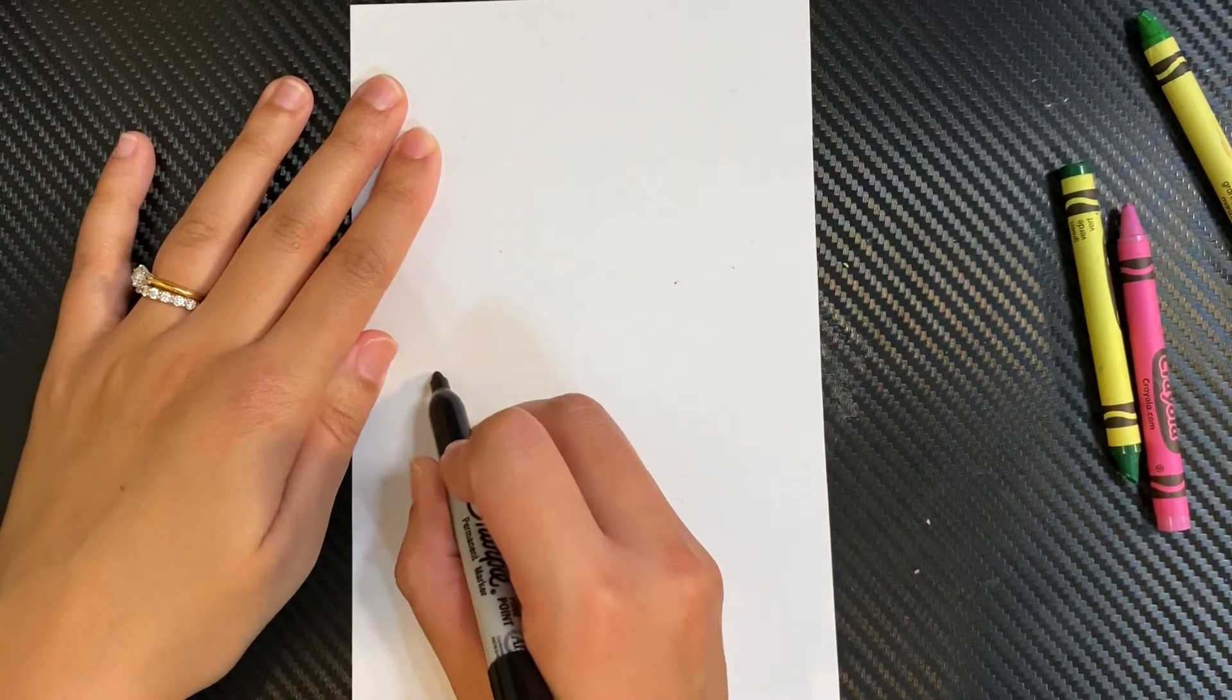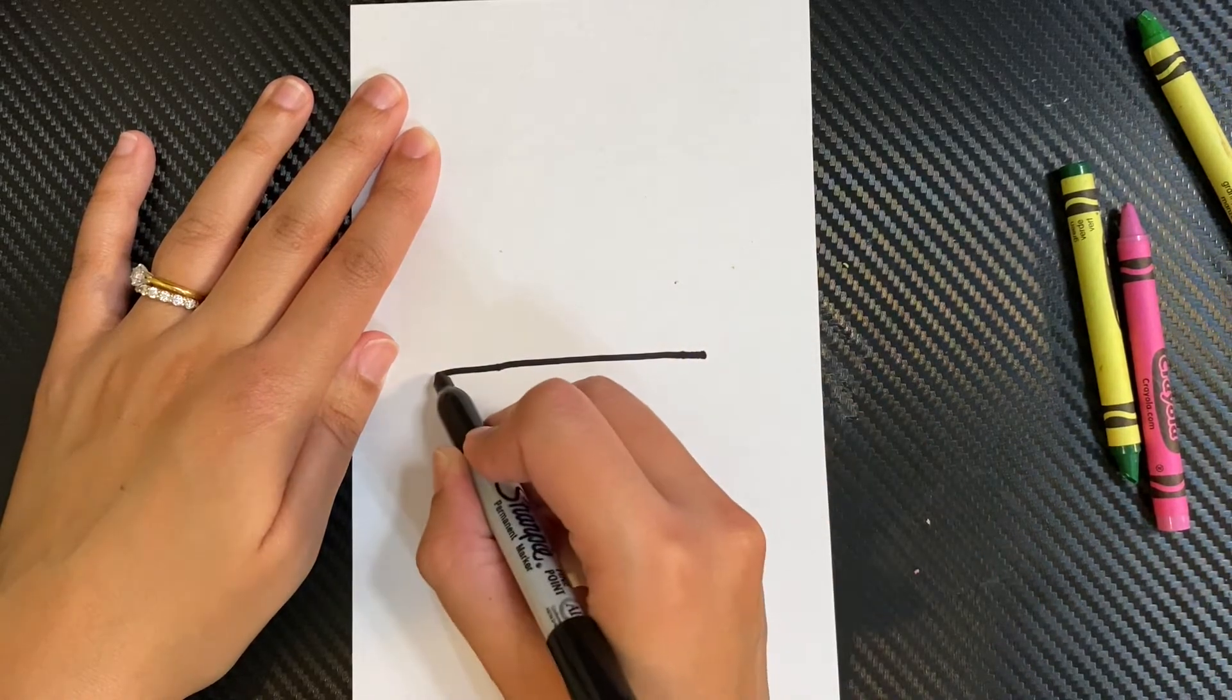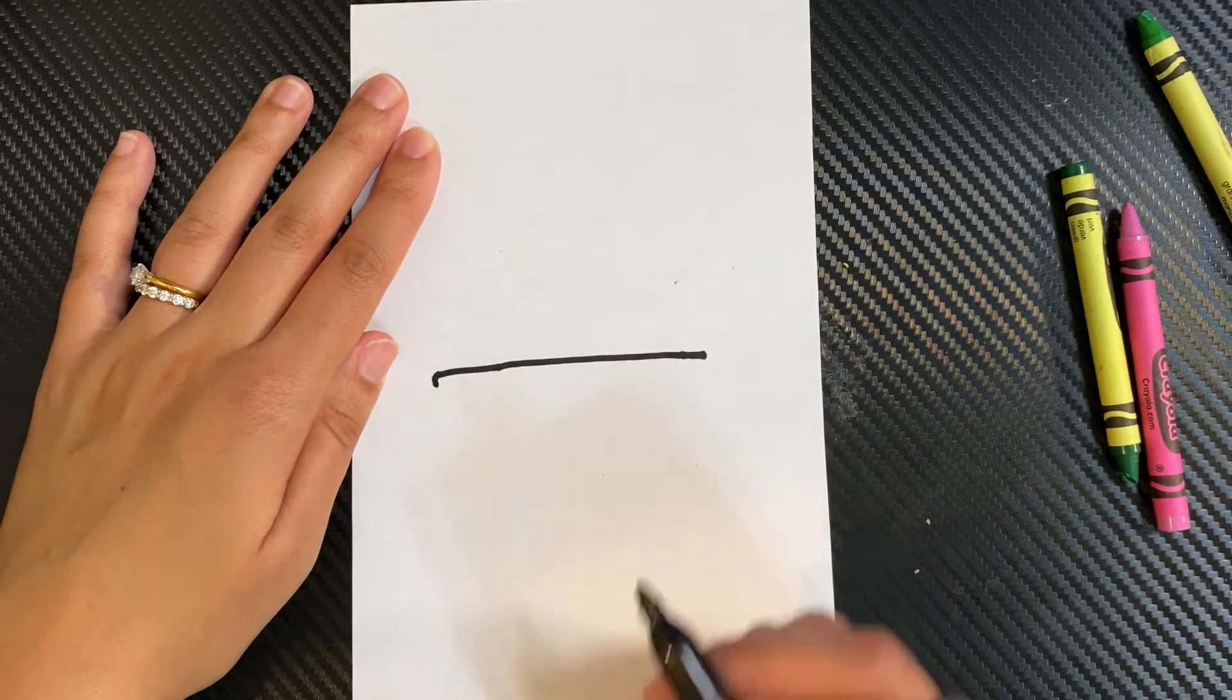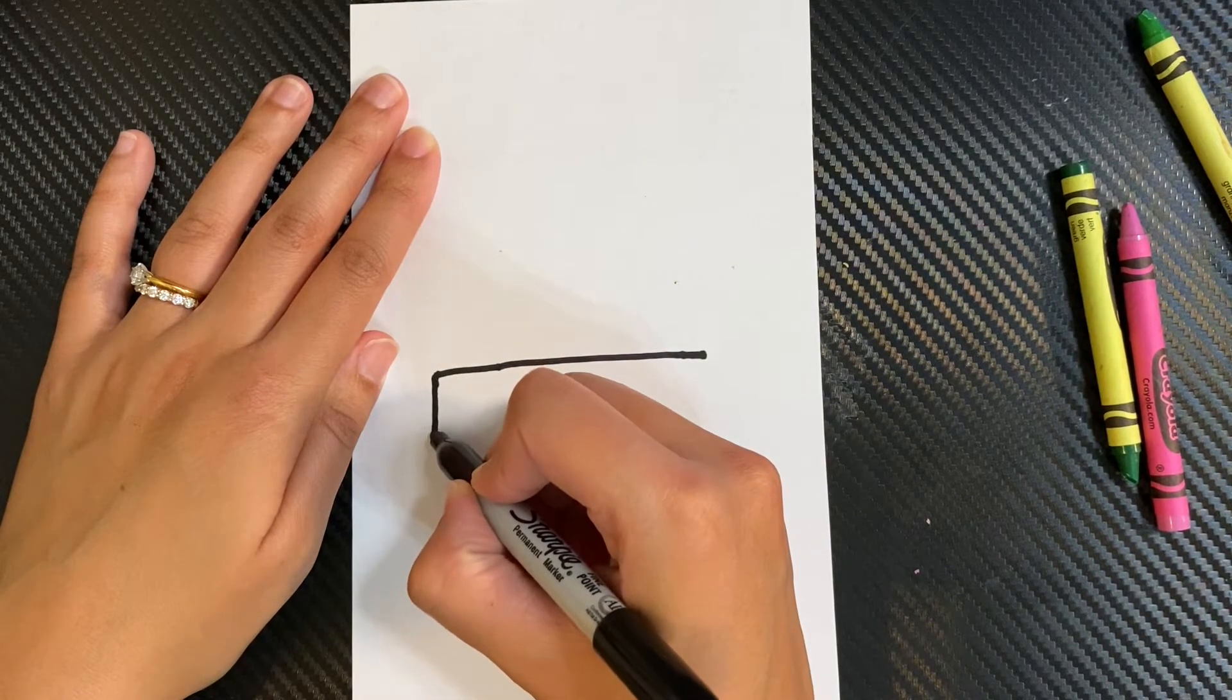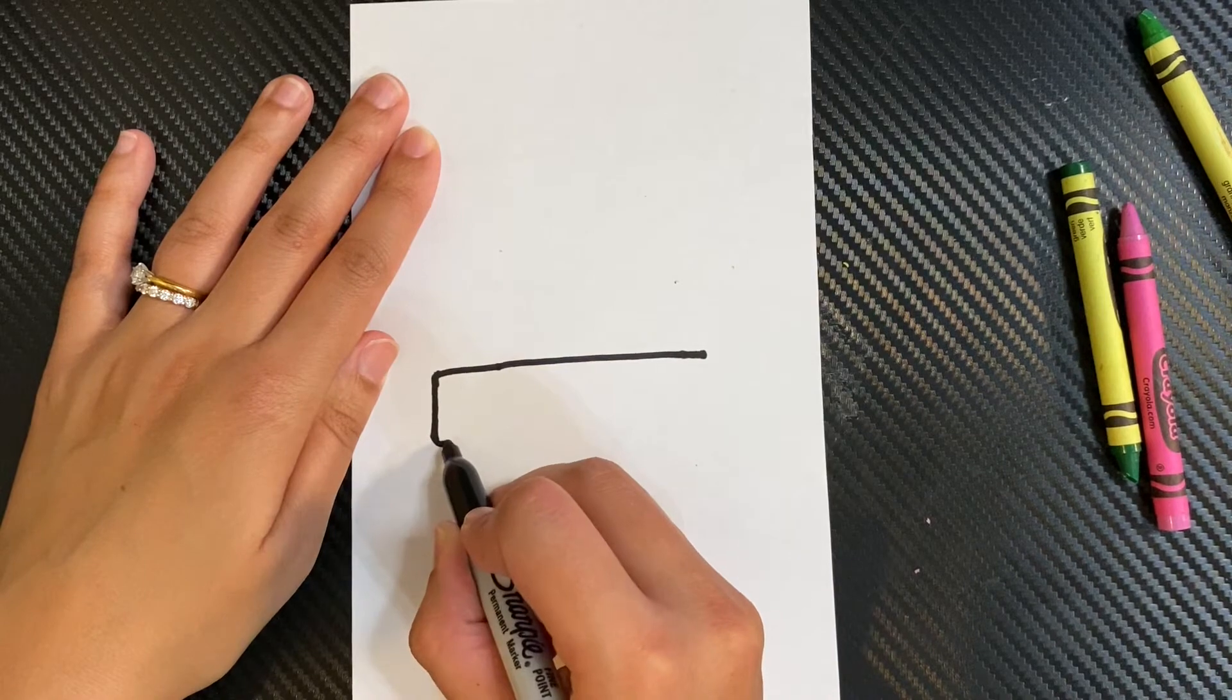First, you're going to start off with a line. Make that line curve down, go down, curve again, and go out.